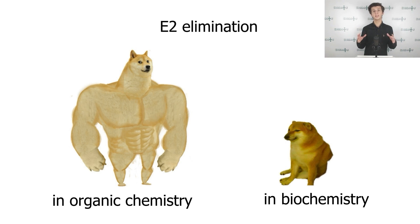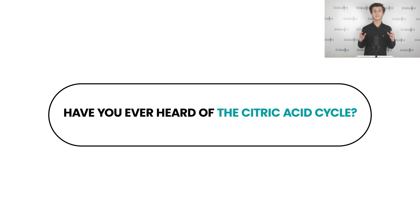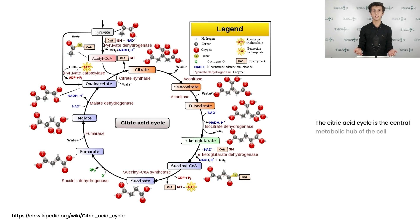Before discussing the specific reaction, ask yourself, have you ever heard about the citric acid cycle? To my mind, the majority of people who are watching this video have heard these words at least once. Nevertheless, I would like to remind you, the citric acid cycle is the central metabolic hub of the cell. It is the gateway to the aerobic metabolism of any molecule that can be transformed into an acetyl group or dicarboxylic acid.